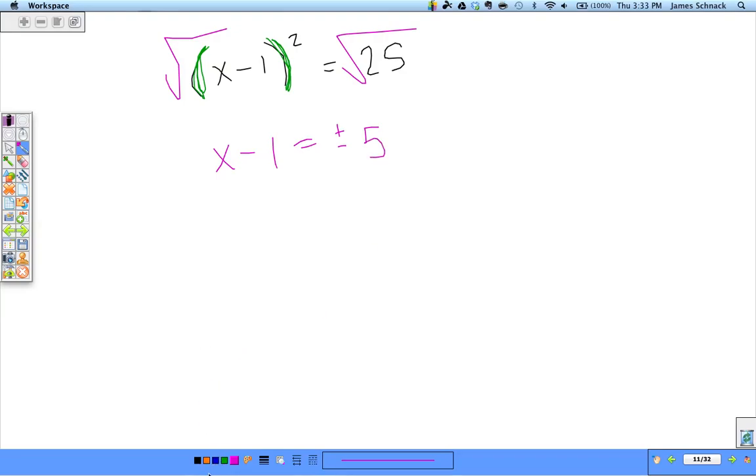Now we've got to ask, is x alone? No, not quite. We have to add 1 to both sides. Again, you've got to be careful. x = 1 ± 5. What that really means is 1 + 5 or 1 - 5, so x = 6 or x = -4.